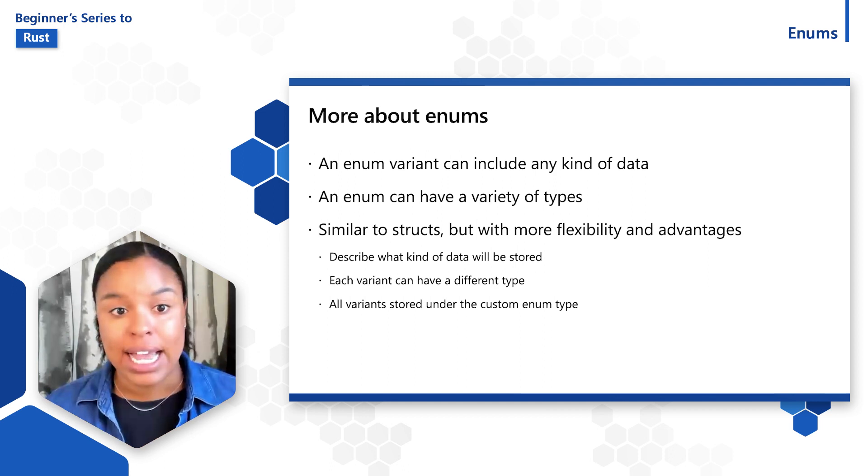And lastly, an enum stores all variants under the same type. So in our example, all variants are stored under the cardinal directions type.